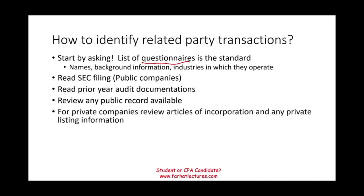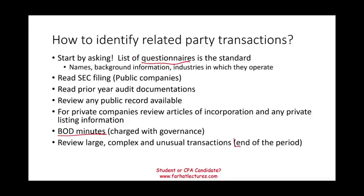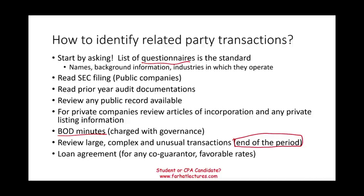For private companies, review articles of incorporation — they may contain names of incorporators and any private listing information. Review board of directors minutes, since large and important transactions go through them, which may reveal red flags. Review any large, complex, or unusual transactions, especially at end of period — this is when companies get desperate to meet earnings-per-share targets or Wall Street estimates. Loan agreements may also give additional information: if there's a co-guarantor, why are they doing that? Are they related? If the interest rate is favorable — lower than market rate — that may trigger red flags worth following.